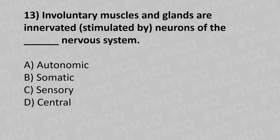Moving to our thirteenth question. Involuntary muscles and the glands are innervated or stimulated by neurons of the dash nervous system. Option A: autonomic. Option B: somatic. Option C: sensory. Option D: central. And the answer is option A: autonomic.